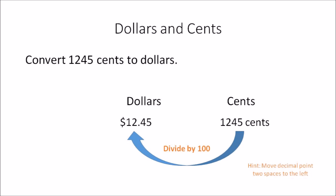Convert 1245 cents to dollars. Again, you're converting cents to dollars, so you divide 1245 by 100. The answer you get is 12.45. As a hint, when you are dividing by 100 you need to move the decimal point two spaces to the left.